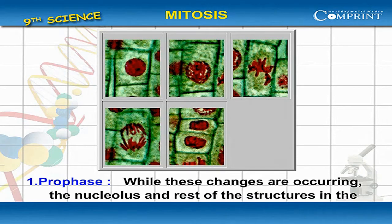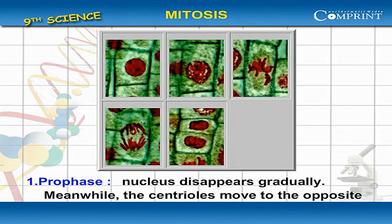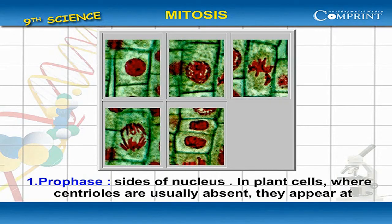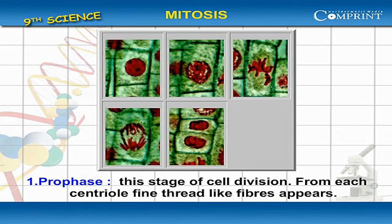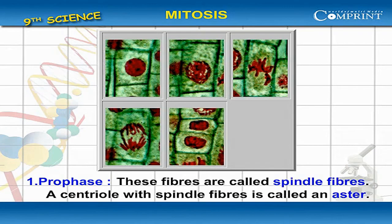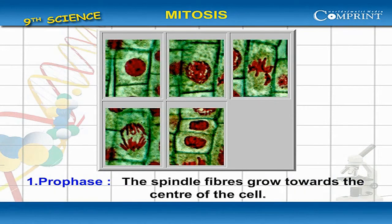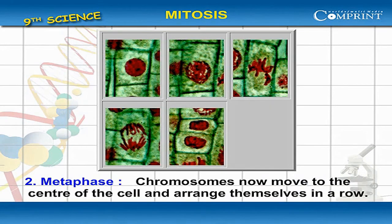While these changes are occurring, the nucleolus and the rest of the structures in the nucleus, except chromosomes, disappear gradually. Meanwhile, the centrioles move to the opposite sides of the nucleus. In plant cells, where centrioles are usually absent, they appear at this stage of cell division. From each centriole, fine thread-like fibers appear. These fibers are called spindle fibers. A centriole with spindle fibers is called an aster. The spindle fibers grow towards the center of the cell.